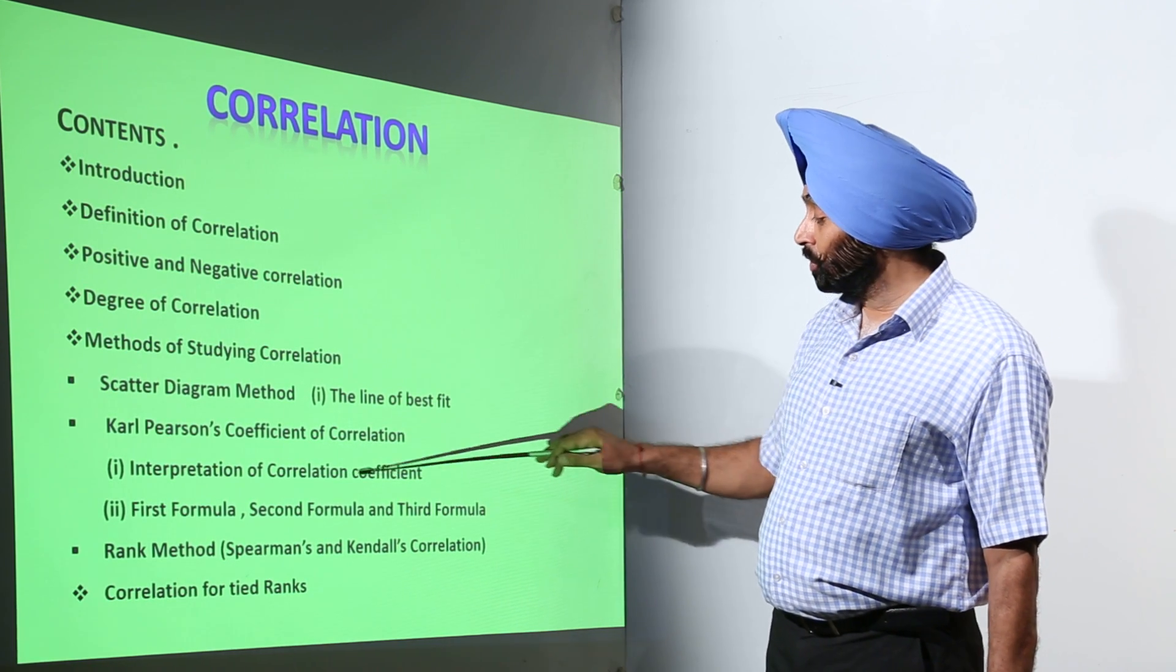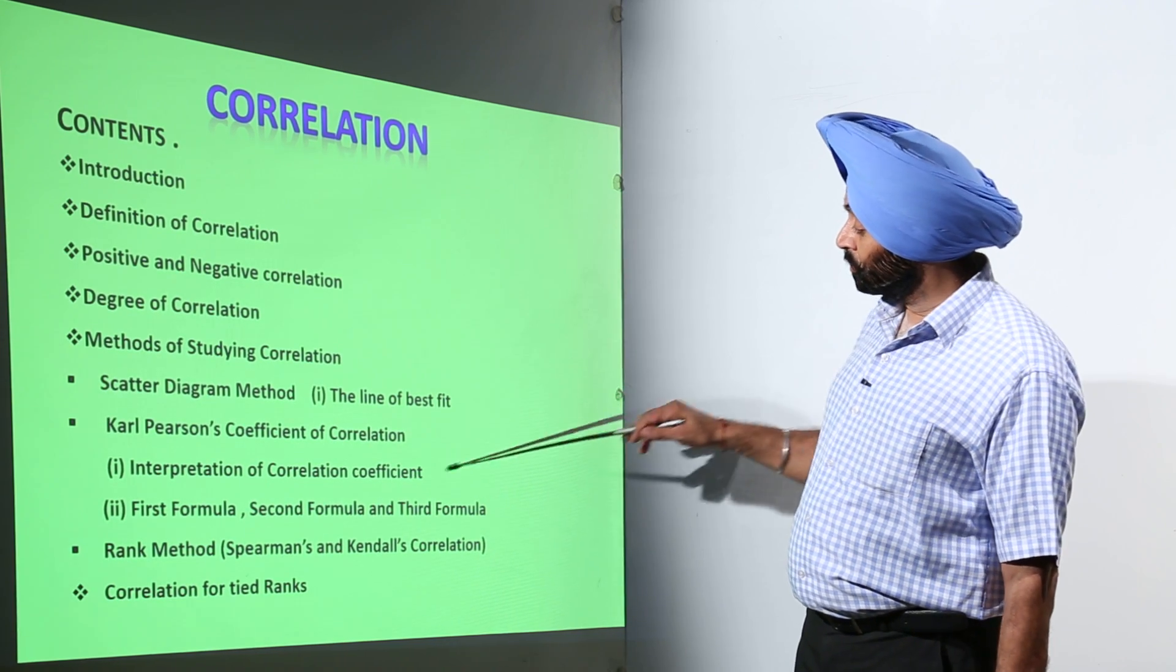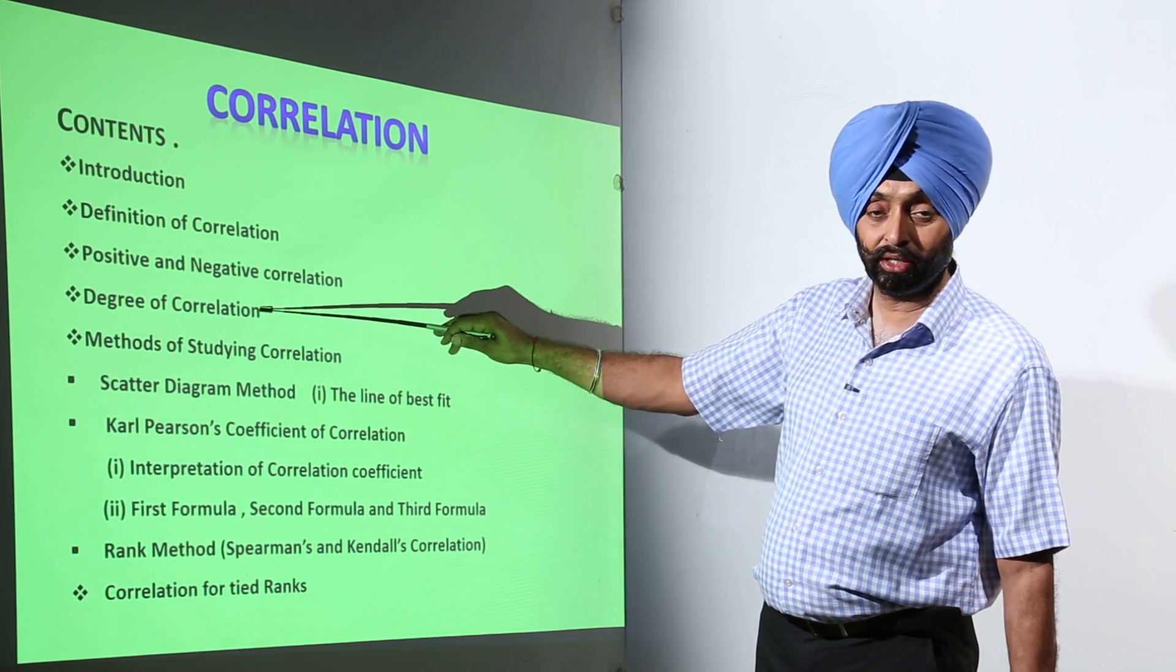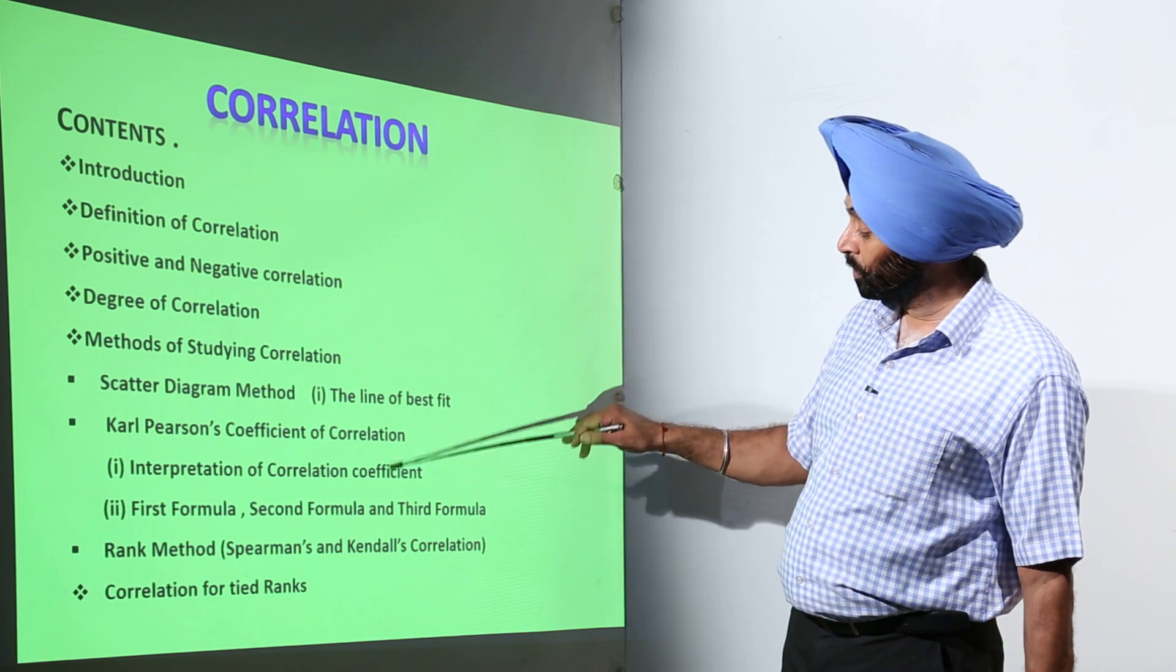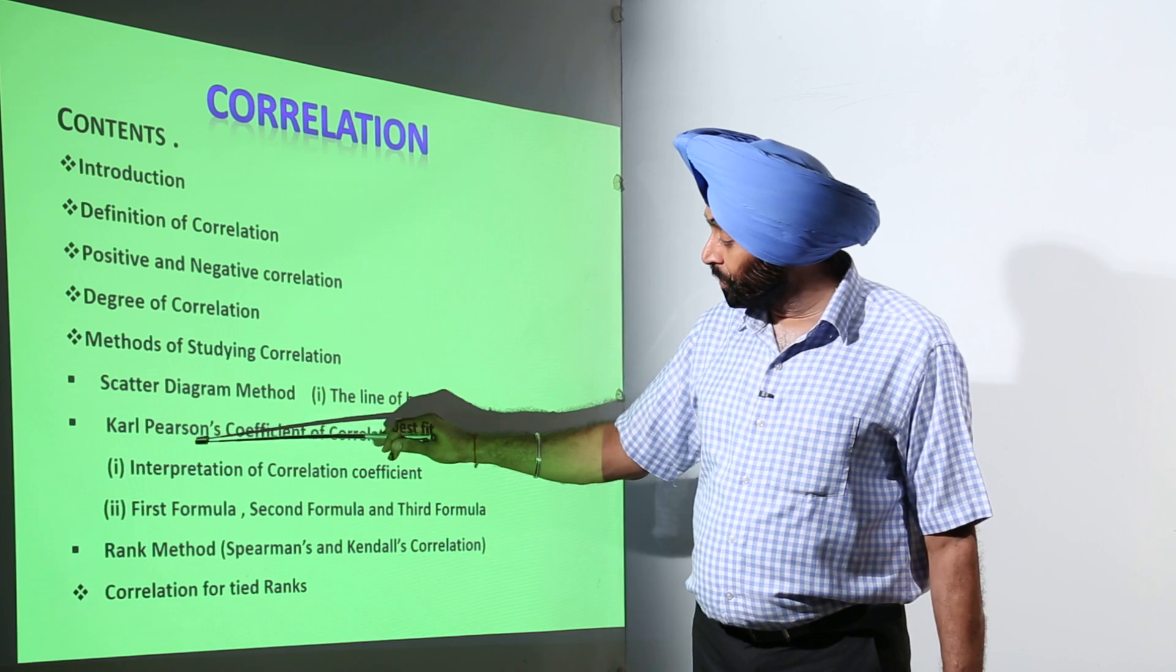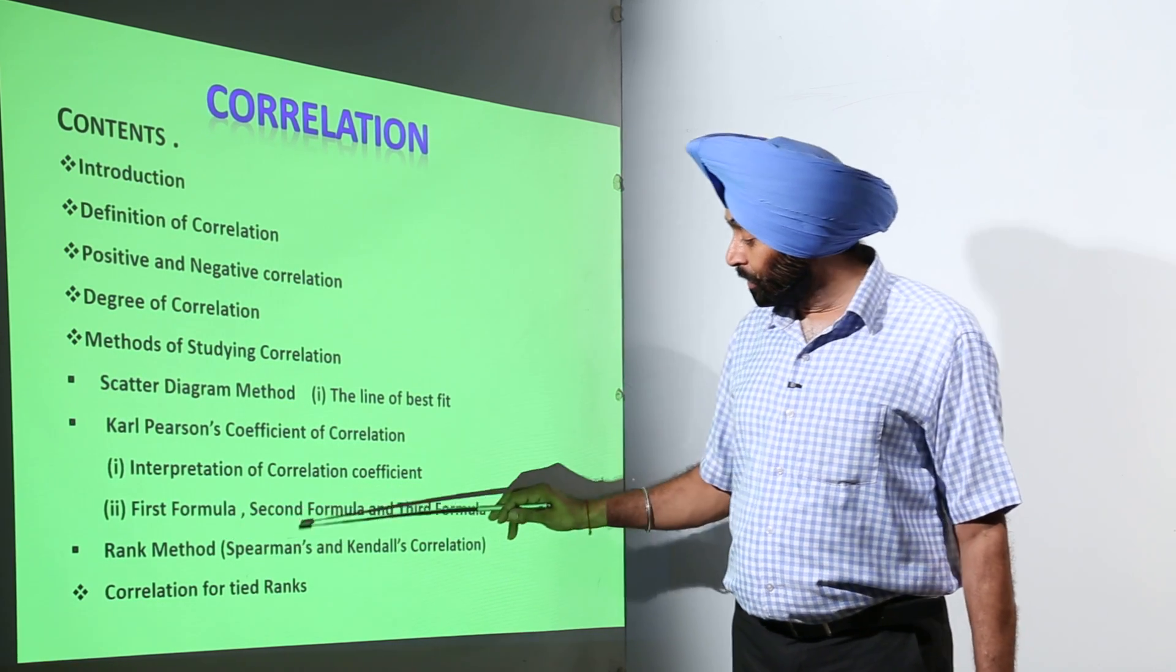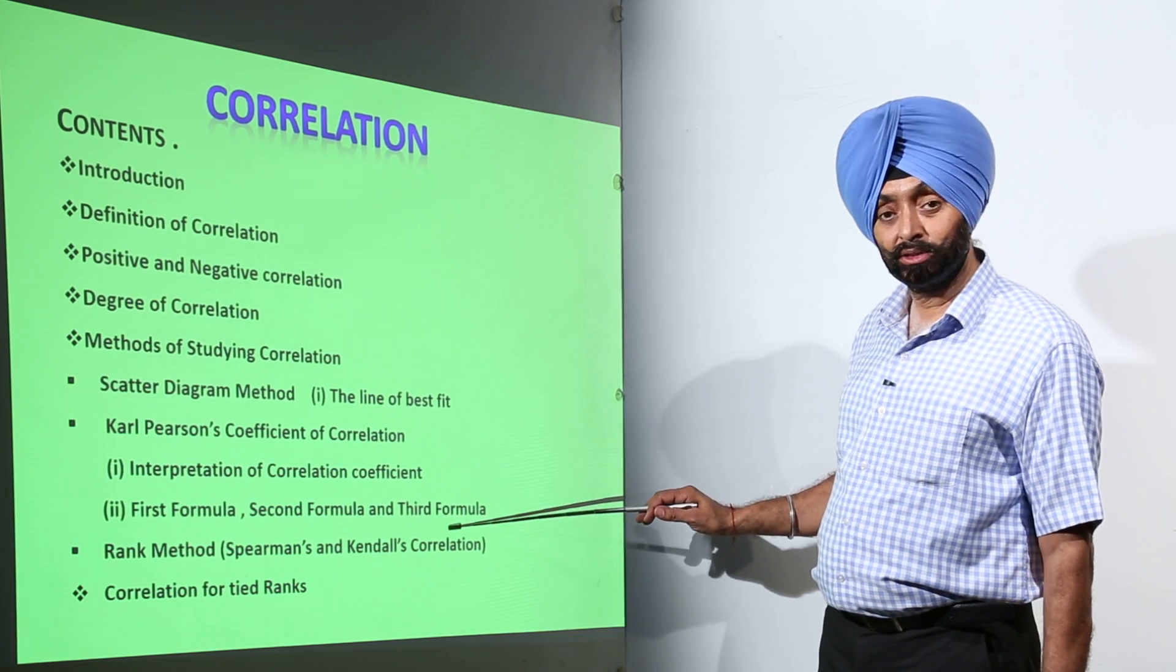Then interpretation of correlation coefficient and interpretation that is related with the degree. After that, for the Carl Pearson's coefficient of correlation we are having his first formula, his second formula, and his third formula.